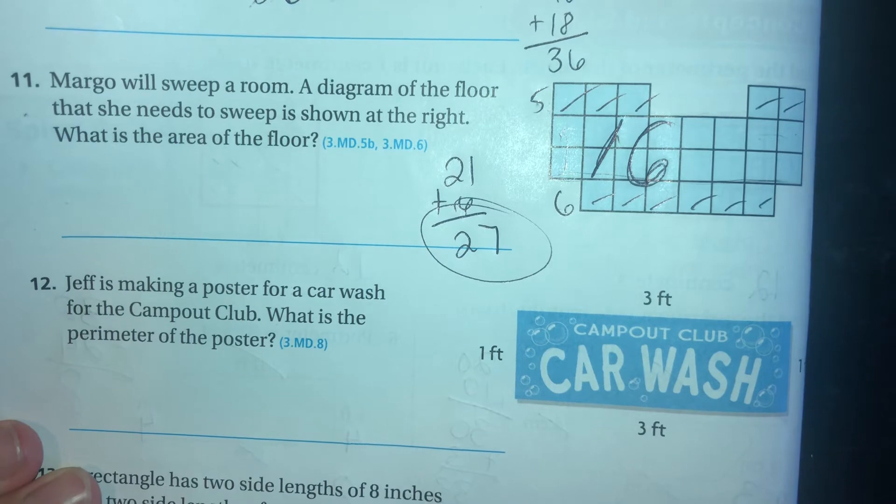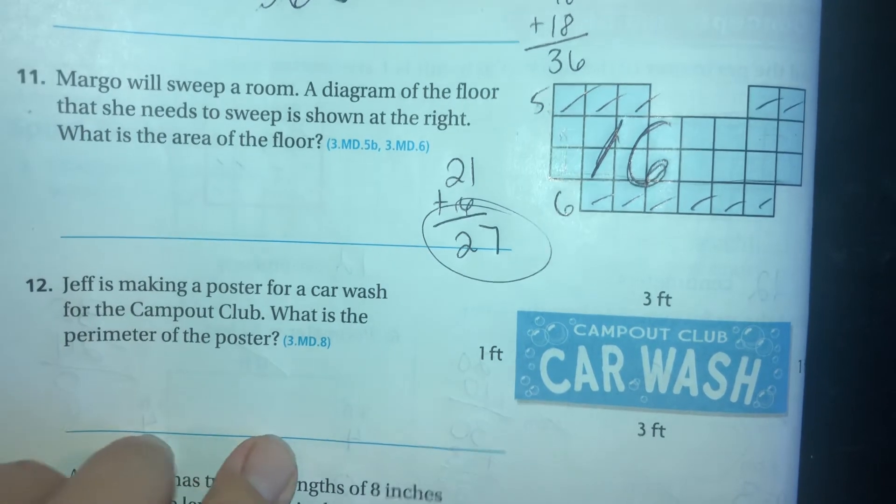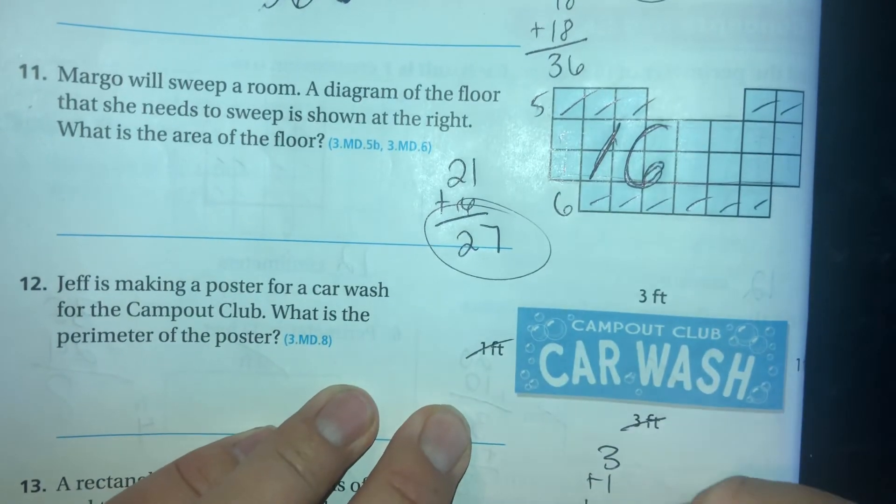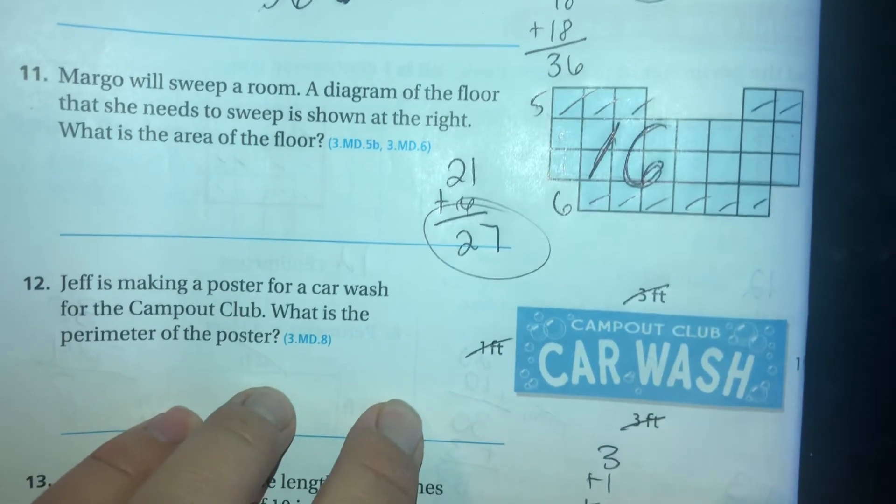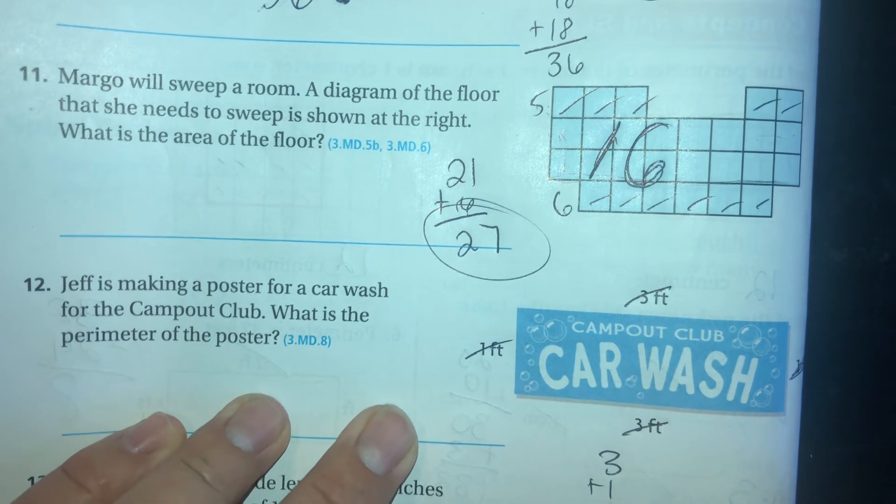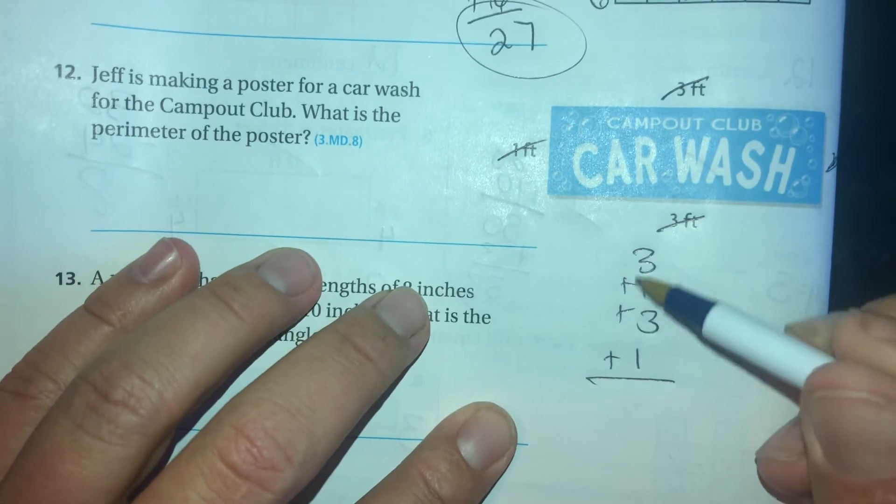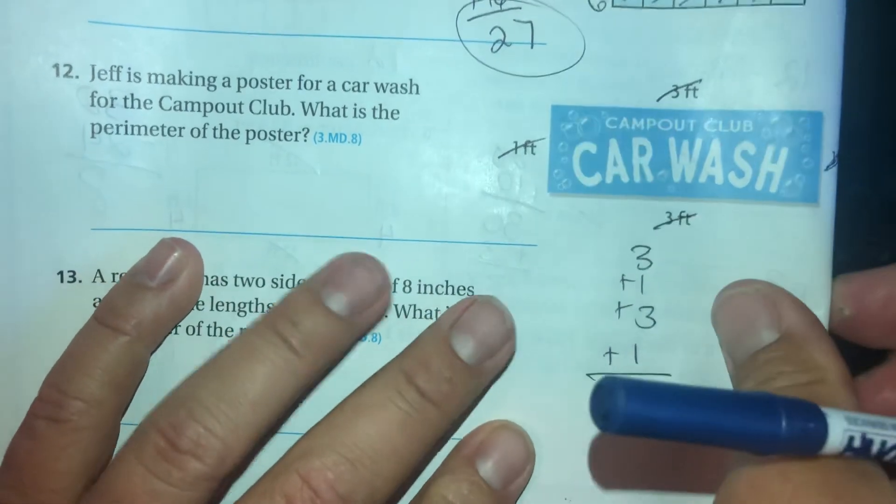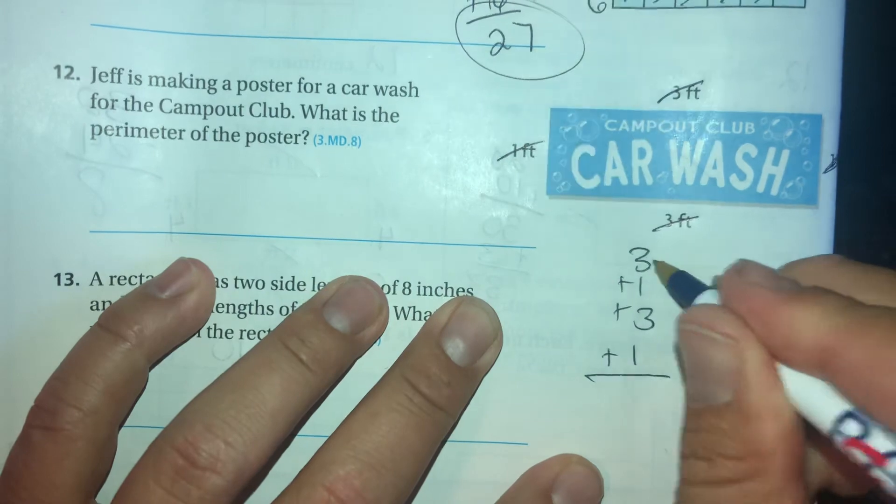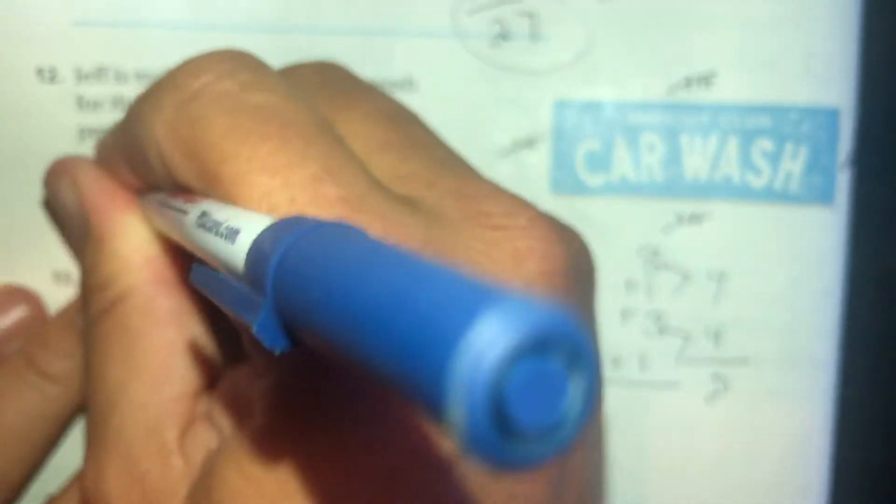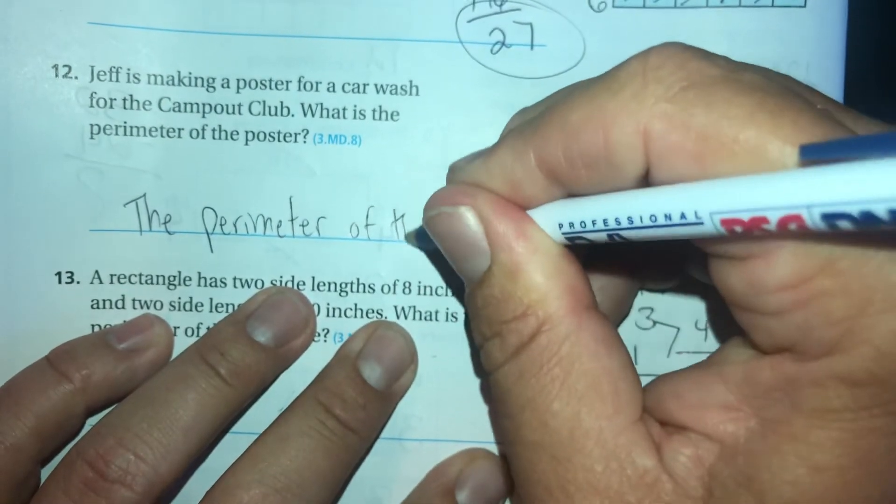Jeff is making a poster for a car wash for the Campout Club. What is the perimeter of the poster? Three plus one plus three plus one over here. So as I write down the numbers here - oops - as I write down the numbers here, I'm crossing them off here so that I can keep track of what numbers I've written down. Let's see, 4, 4, so the whole thing is 8. The perimeter of the poster...